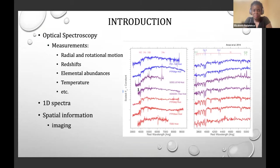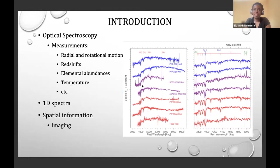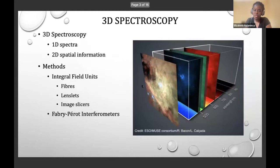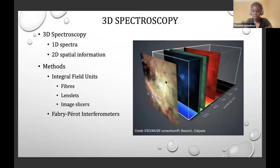Optical spectroscopy enables measurements of composition, radial velocities, rotational velocities, elemental abundances, and temperatures of objects of interest. However, with traditional spectroscopy we only get a one-dimensional view. To get spatial information together with 1D spectra, we have to make extra imaging observations. This is where 3D spectroscopy comes to the rescue — it enables us to simultaneously obtain 1D spectra and 2D spatial information, giving us a data cube with X and Y spatial axes and a third spectral axis.